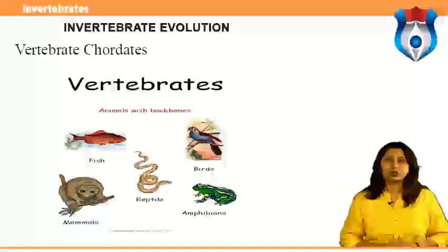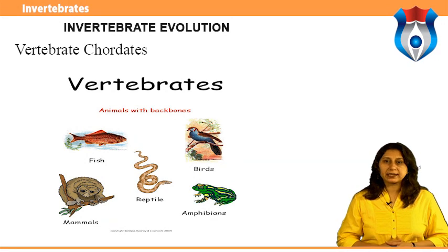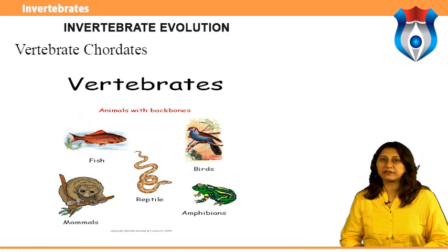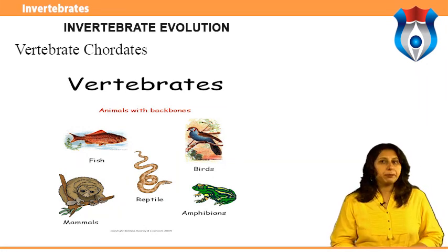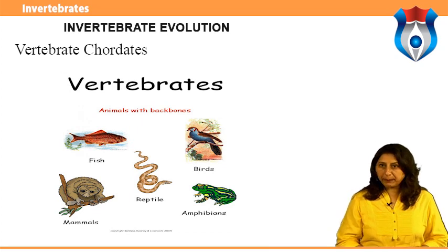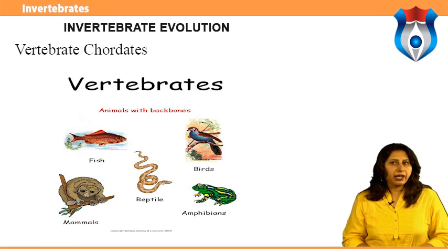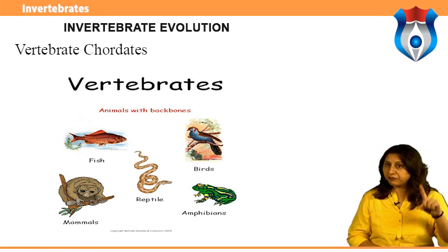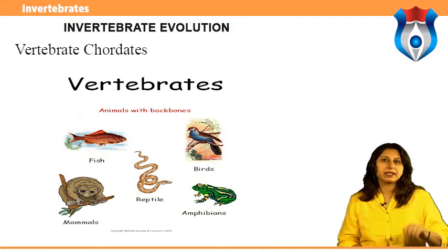Vertebrate chordates differ from invertebrate chordates in possessing an internal skeleton including a vertebral column enclosing the nerve cord, a brain enclosed in a skull, a pumping heart, and efficient blood circulation. There are four classes of recent vertebrates: amphibians, reptiles, birds, and mammals.